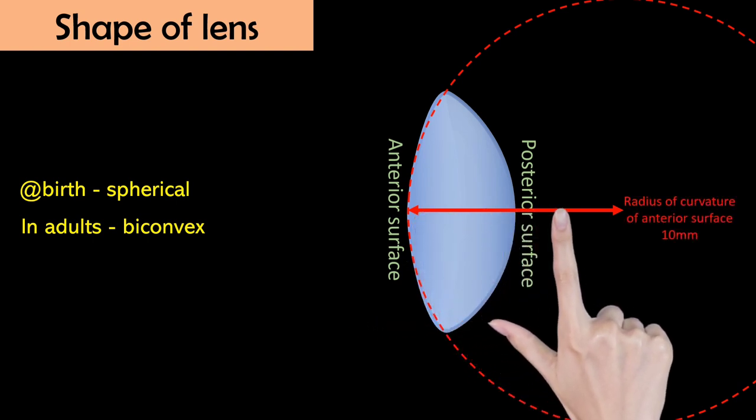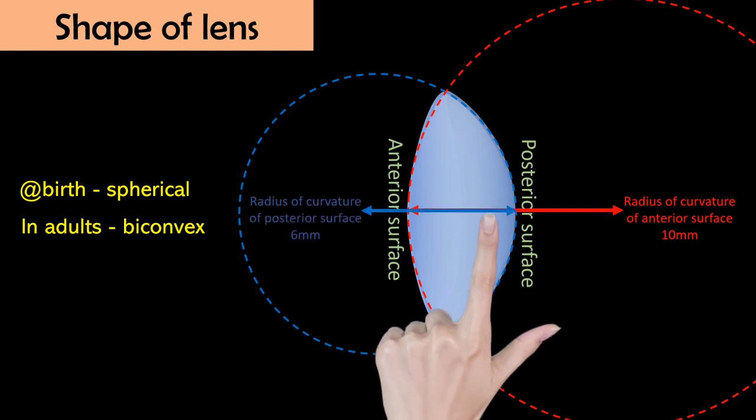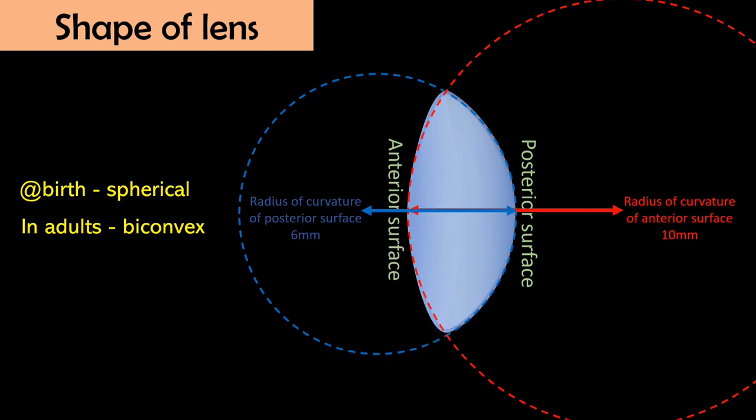If I make a complete circle for posterior surface which is more curved than the anterior surface or I can say steeper, then this would be radius of curvature of posterior surface which is about 6 mm. Now you got it that more curved surface has lesser radius of curvature and less curved surface has more radius of curvature.